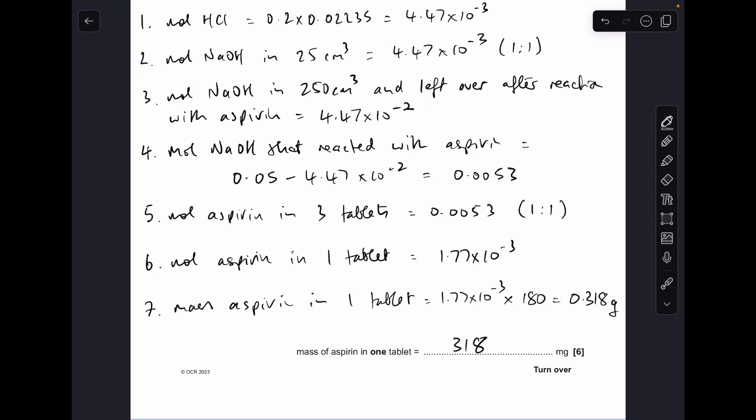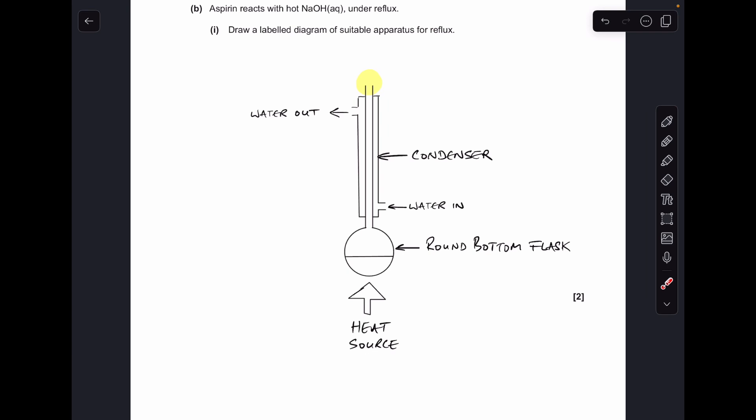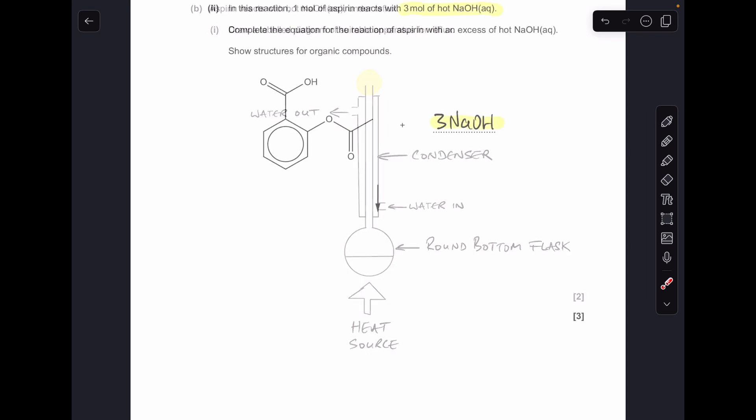Moving on to part B and the labelled diagram for reflux. Something like I've drawn here is absolutely fine. Obviously you need a heat source under—I've gone for a round bottom flask, you could go pear-shaped flask if you wanted to—and then straight into a vertical condenser. Just make sure that you've got no gaps where the flask joins onto the condenser, otherwise the vapors could leak out. They're going to want to see the correct water flow: in at the bottom, out at the top. There should never be anything on the top of the condenser, it needs to be left open, otherwise pressure would build up and you don't want that.